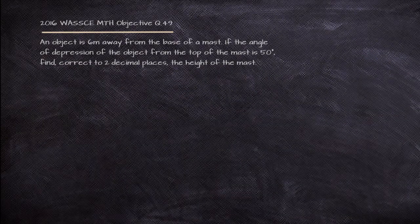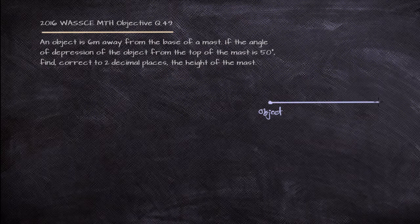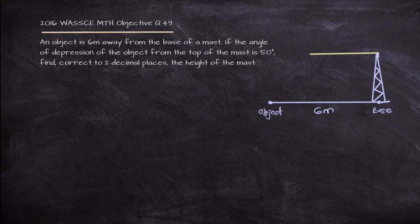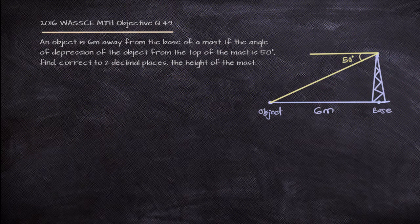We have an object that is 6 meters from the base of a mast, and we are given the angle of depression of the object from the top of the mast. We are to find the height of the mast. Drawing the diagram, we draw the horizontal line from the top of the mast and mark the angle of depression as 50 degrees. We are asked to find the height of the mast.